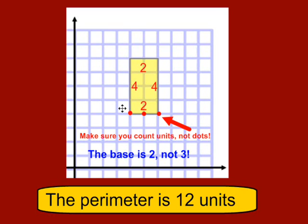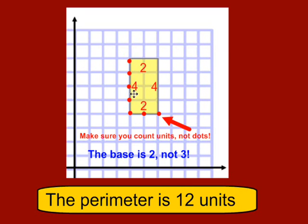The height of the rectangle here is actually four units — it's four blocks high. But again, a common mistake that some students will make is they'll count the intersection points: one, two, three, four, five. They think it's five units high when in fact it's only four. And then of course, to calculate the perimeter, we would just add up the sides.